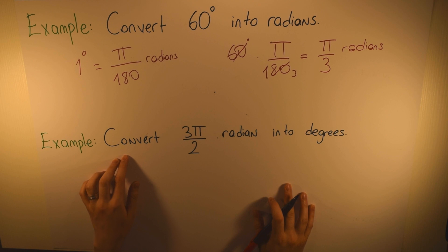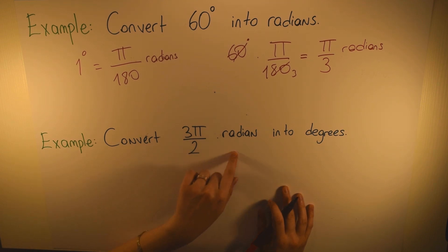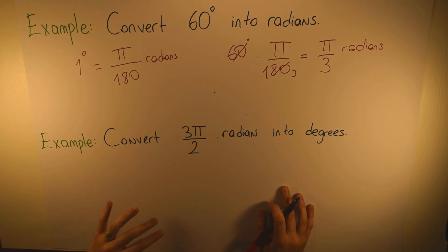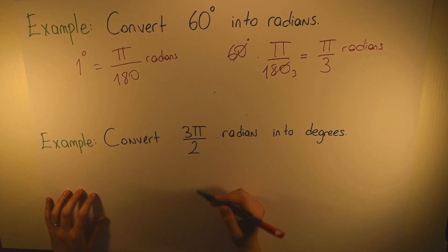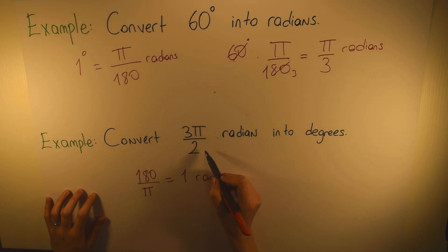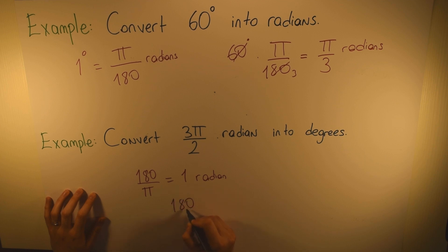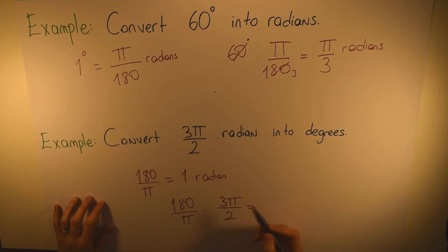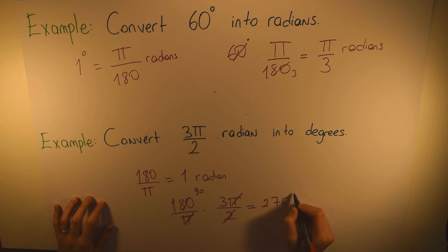In our second example: convert 3π/2 radians into degrees. Here we will do the opposite. As we learned before, 180/π equals 1 radian in degrees. We know this radian, so all we need to do is multiply: 180/π times 3π/2. The π's cancel out and we have 90 times 3, which equals 270 degrees.